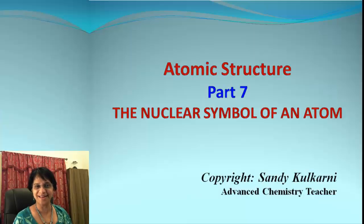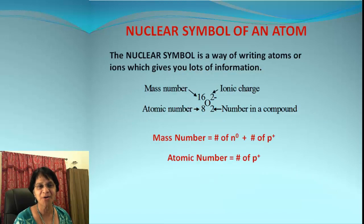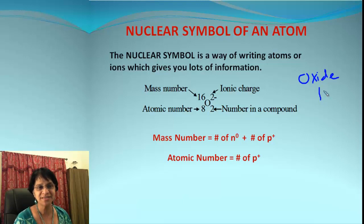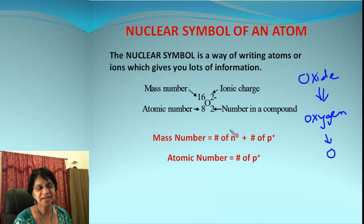Hey kids, Miss Kulkarni here. In this video let's talk about the nuclear symbol of an atom and figure out how we came up with the answers. Here's an example of a nuclear symbol for an oxide ion. There are different parts to a nuclear symbol. One of them is we need to have a chemical symbol from the periodic table corresponding to that element. Oxide has the element oxygen, so we need the symbol O.